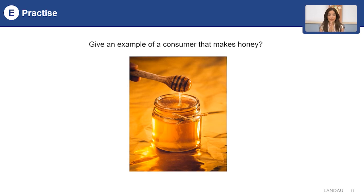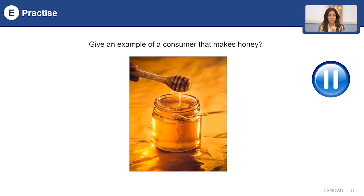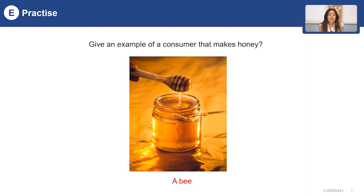Now let's start practice. Could you please give me an example of a consumer that makes honey? You can think about this question and come back with your answer. Yes, you guys were probably absolutely right — it is a bee. A bee is a consumer that makes its own food, and it's honey.